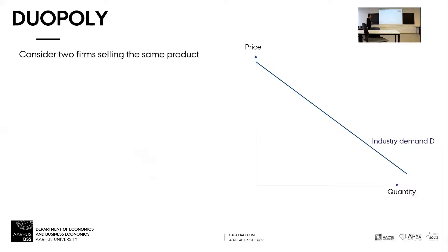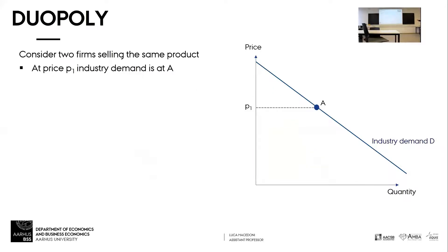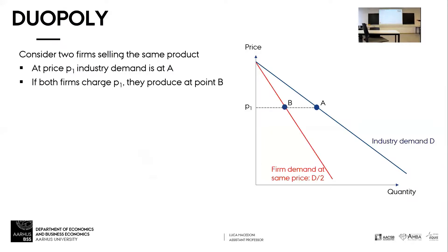Here we have the industry demand. We have a particular price P1, and at price P1 the demand is at point B. What is the demand that each firm is getting at that price? At $100 we sell 5 million beers — how many beers does each firm sell? Half of that. So the total industry demand is at point B, and the firm-level demand is half of that at point b.